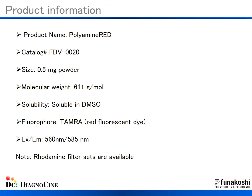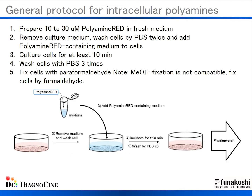Here is the product information for polyamine red. It comes in 0.5 milligrams powder, and you must resolubilize the powder into 100% DMSO. The fluorophore is TAMRA red with an excitation of 560 nanometers and emission of 585 nanometers, and a rhodamine filter must be used to visualize red fluorescence. First, you prepare 10 to 30 micromolar polyamine red in cell culture medium.